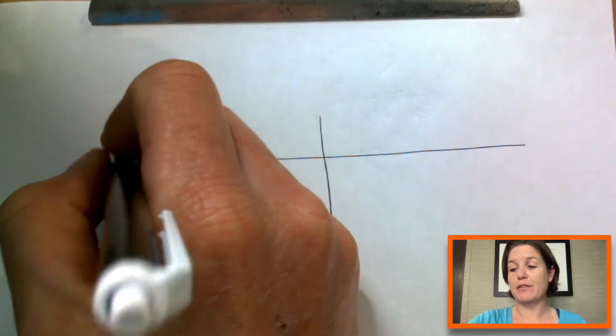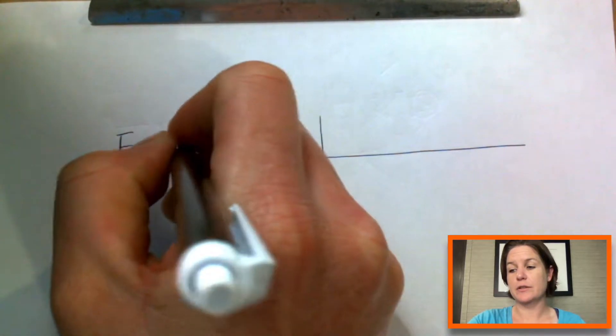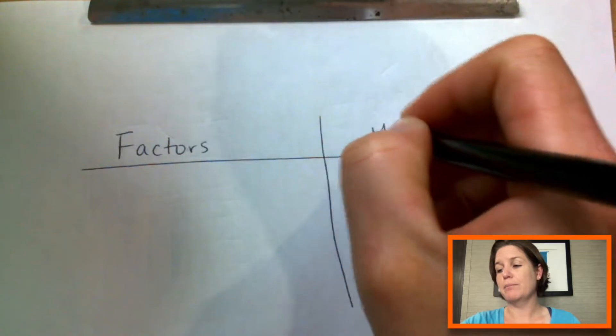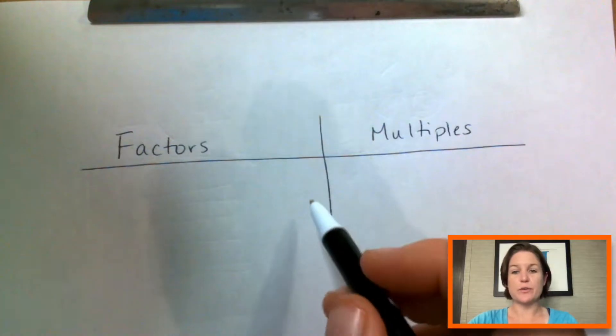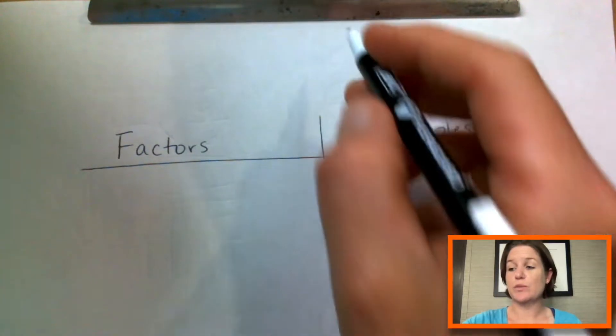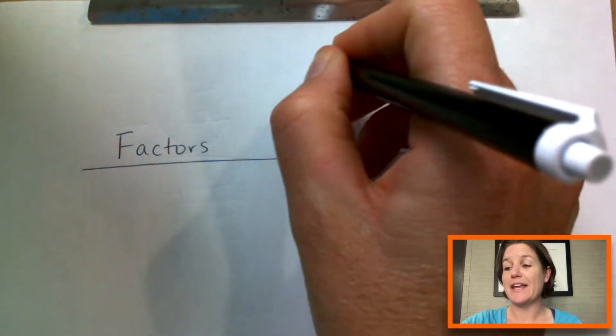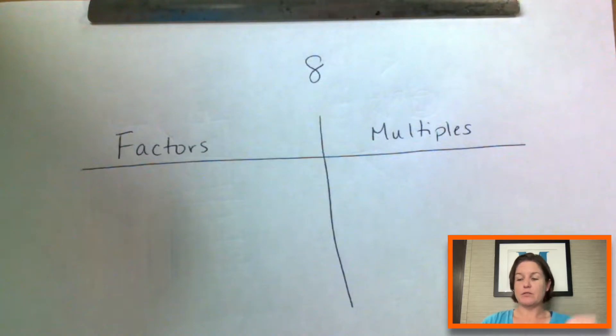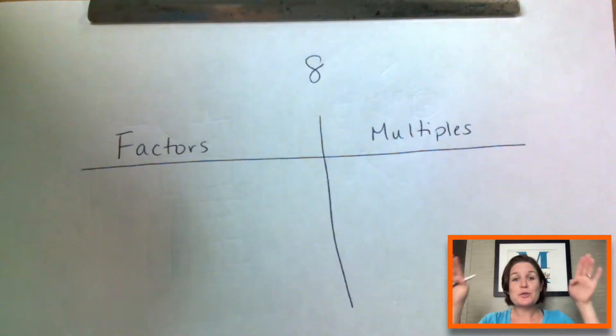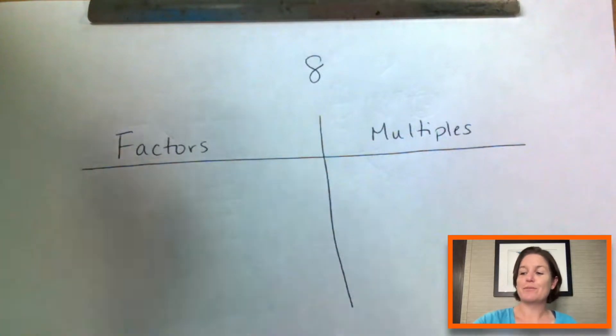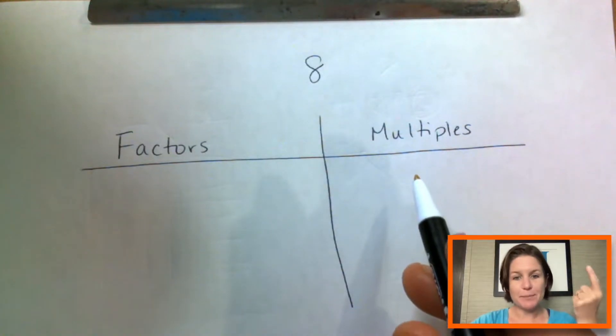Okay. So to review, we've got factors and we have multiples. What we're going to do for this example in this video today is we are going to find the factors and the multiples of eight. Now for factors, factoring, I want you to think of a factor rainbow. And for multiples, I want you to think skip counting.